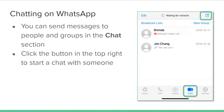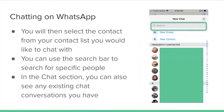You can send messages to people and groups in the Chat section. Click the button in the top right to start a chat with someone, then select the contact from your contacts list that you'd like to chat with. You can use the search bar to search for specific people. In the chat section you can also see any existing chat conversations you have.